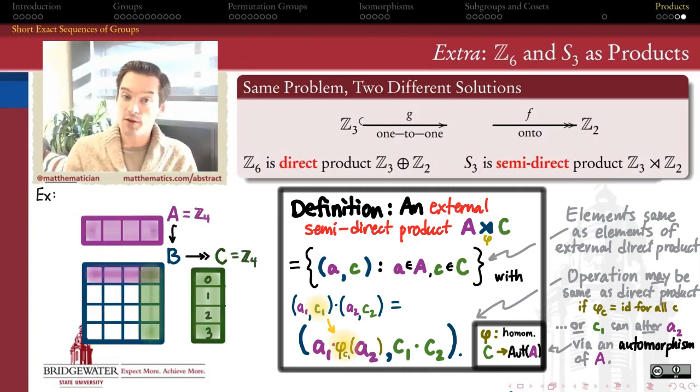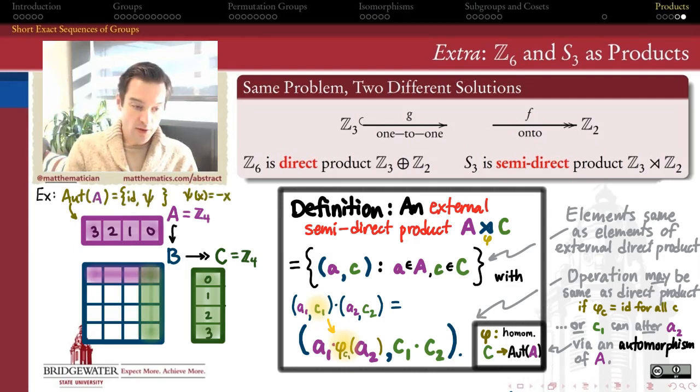Let's look at an explicit semi-direct product construction to wrap up this video and get you a feel for how all this stuff actually works. To get an interesting example, I'm going to have to use, instead of Z3 and Z2, let's use Z4 and Z4. So let's suppose I want to build a group that has Z4 as one of its subgroups and which also has Z4 as the cosets of that subgroup inside of B. But I want to do it in a way in which this group in the middle is not just the direct product of Z4 with Z4. How can I do a semi-direct product construction here?